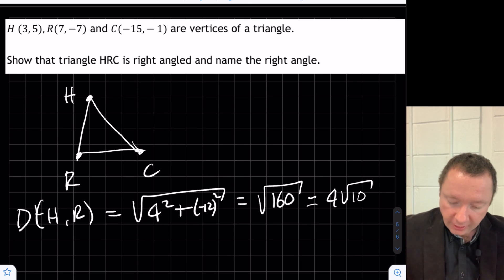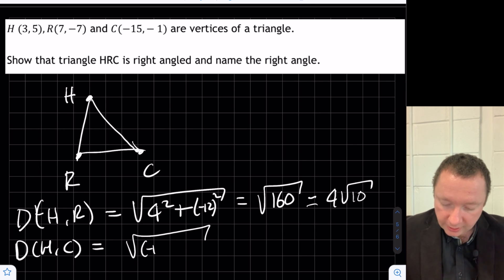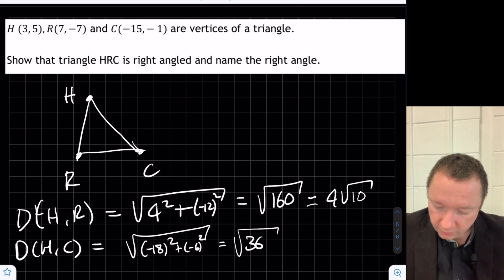Okay, let's do the distance from H to C. So that's minus 15 take away 3, which is minus 18 squared. Minus 1 take away 5 is minus 6 squared. That's the square root of 360. That's 36 times 10, so that's 6 root of 10.